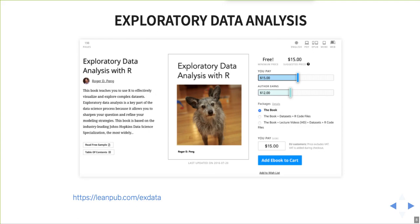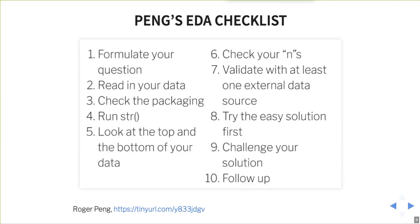Exploratory data analysis: Roger Peng, who is a professor at Johns Hopkins and one of the professors in their exceptionally popular data science Coursera courses — they've taught over a million people data science — has a book on the LeanPub platform called Exploratory Data Analysis with R. There's a free version available. He has a nice EDA book that helps you get into it more in depth than we're going to do in the next 50 minutes. We're going to take some of his ideas. He has a checklist of the tasks you do when you approach exploratory data analysis.